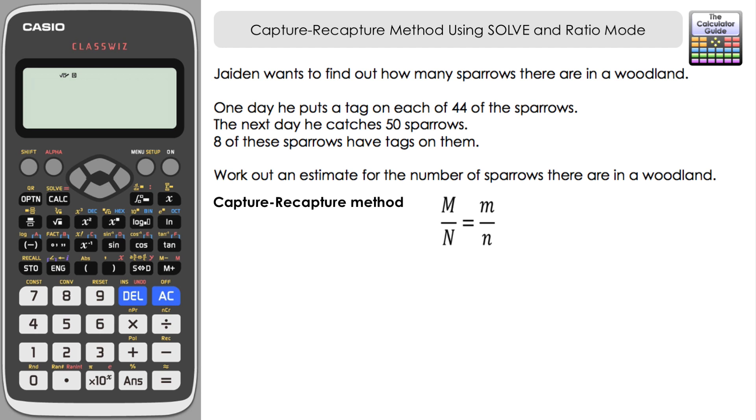We're going to use SOLVE on the calculator to help us out, so we're going to set this up as it is written. We're going to use the fraction button first. Let's input the left-hand side. So capital M is the number of sparrows we initially tagged—that's 44 over—and the total population that we don't know yet, that's what we're trying to work out, so we're going to use the letter x to represent that as an unknown. Navigate right to go back to the working line.